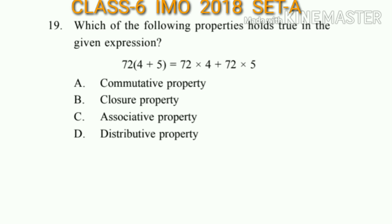Question number 19: Which of the following properties holds true in the given expression: 72 multiplied by (4 plus 5) equals 72 multiplied by 4 plus 72 multiplied by 5? This is the distributive property, where a multiplied by (b plus c) equals a multiplied by b plus a multiplied by c. So the answer will be option D.